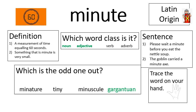Two definitions: 'minute' — a measurement of time equalling 60 seconds; or 'minute' — something that is very small. If you're thinking about a measurement of time, 'minute' is a noun. If you're using the word to mean something very small, it's an adjective — a describing word, just like 'small'. The odd one out was 'gargantuan', because gargantuan means really massive and huge, whereas the other three words — miniature, tiny, and minuscule — are synonyms for minute meaning very small. My sentences were: 'Please wait a minute before you eat the nettle soup,' and 'The goblin carried a minute axe.'